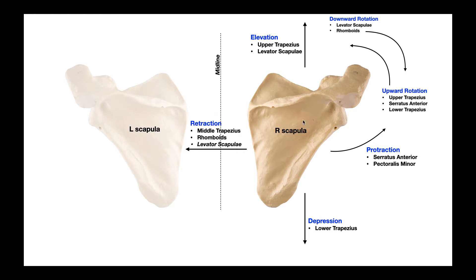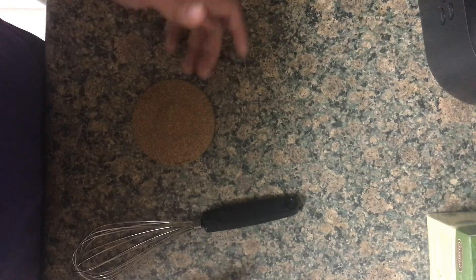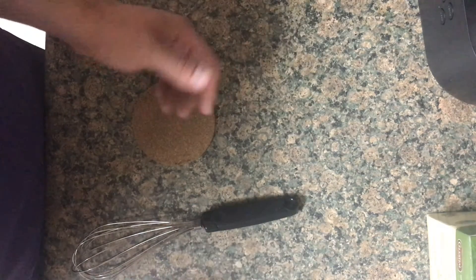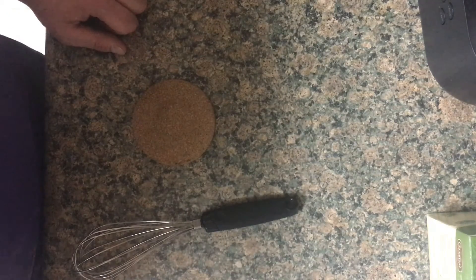Why would you want to retract or protract the scapula? To answer that, you need to understand why scapular movements exist at all. Remember that the glenoid fossa houses the head of the humerus, forming the glenohumeral joint. Scapular movements alter the range of motion of the humerus, increasing it in a particular direction. To illustrate this, here's an analogy using some kitchen utensils.